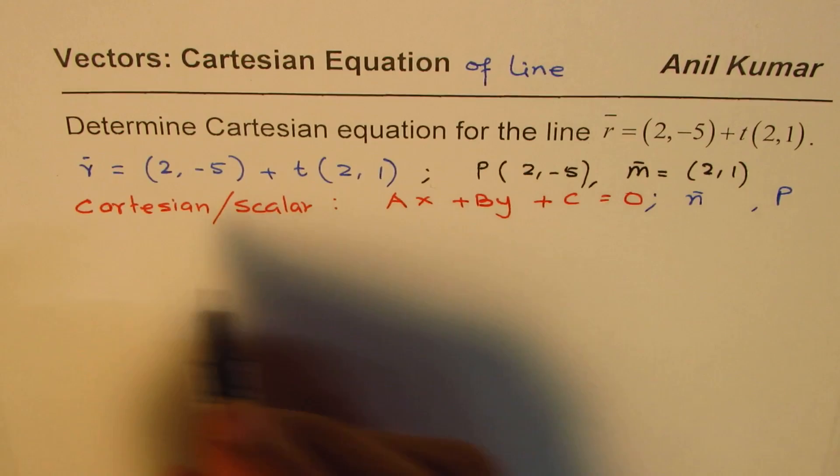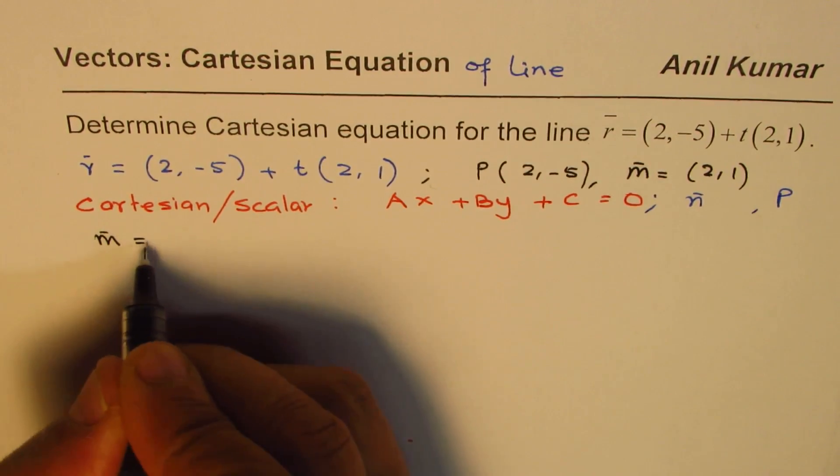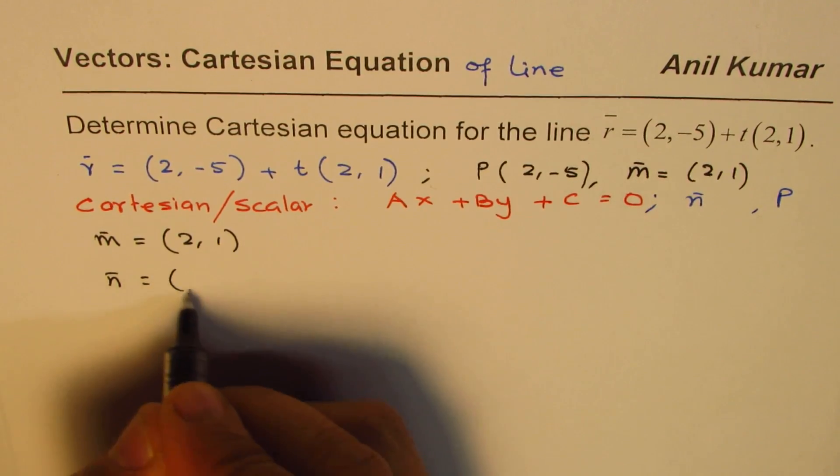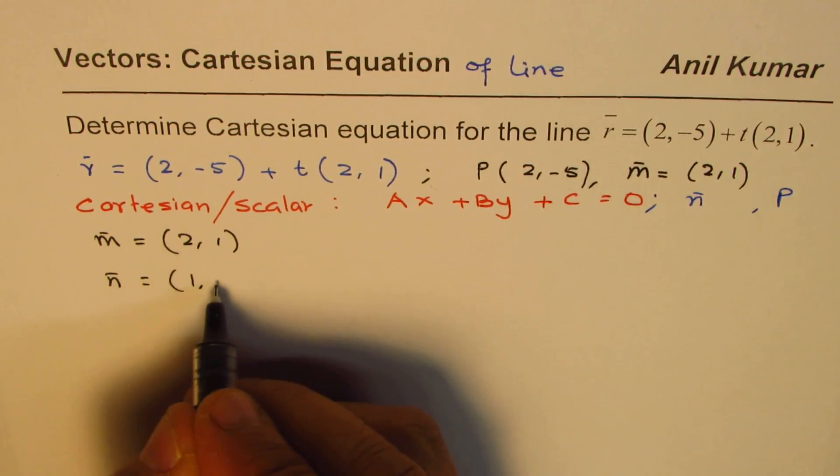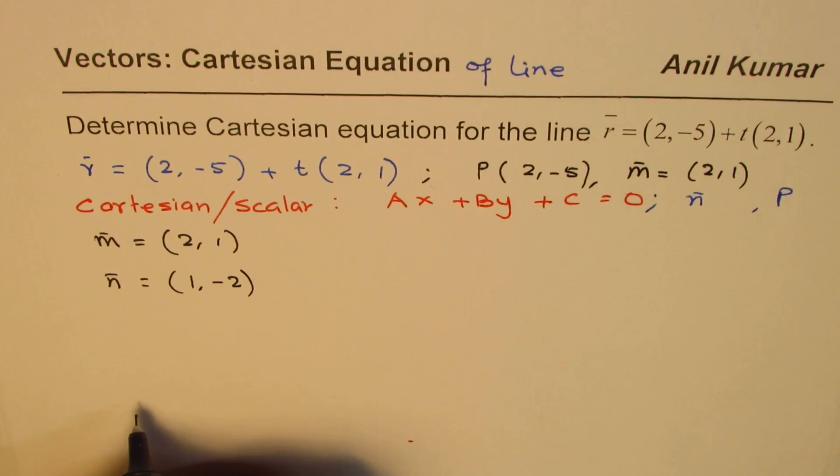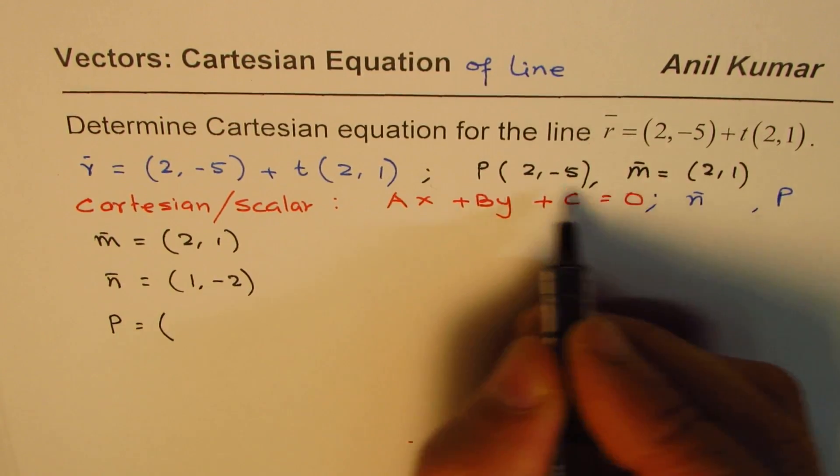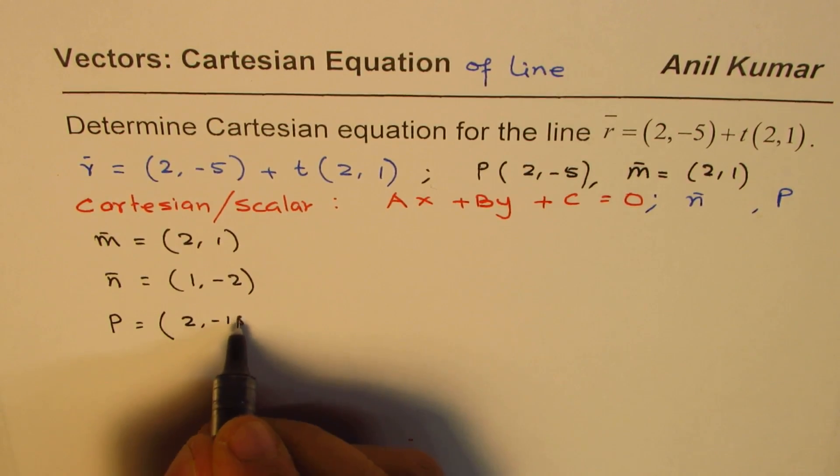So that should not be difficult. So we know that the direction is 2, 1. Therefore, the normal should be, reverse it, 1, and you can make one of them negative, let's say -2. Got it? And we already know the point, which is given to us as 2, -5.